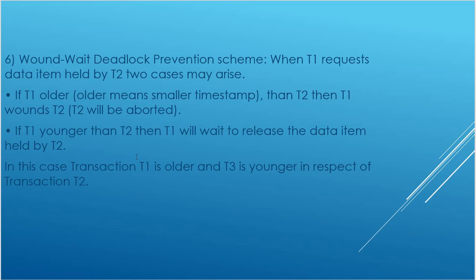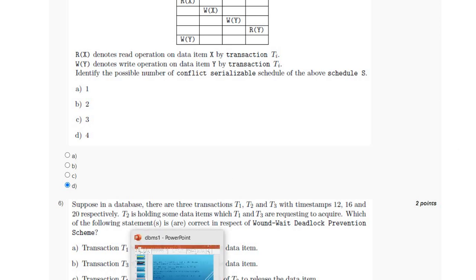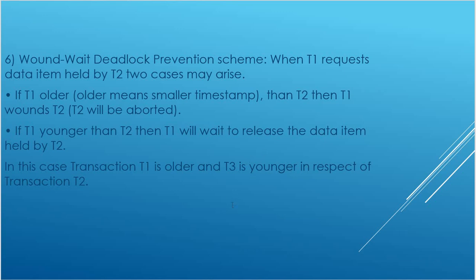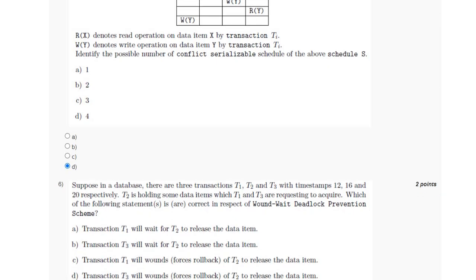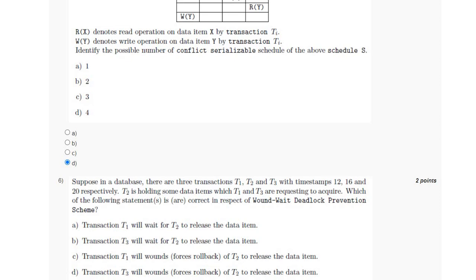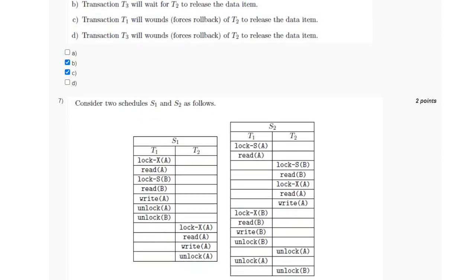In this case, transaction T1 is older because its timestamp is 12. T3 is younger with respect to T2 because T3's timestamp is 20, which is more than T2's timestamp of 16. So the older transaction wounds and the younger transaction waits. The answer is option B and C: T3 will wait for T2 to release, and T1 will wound transaction T2.